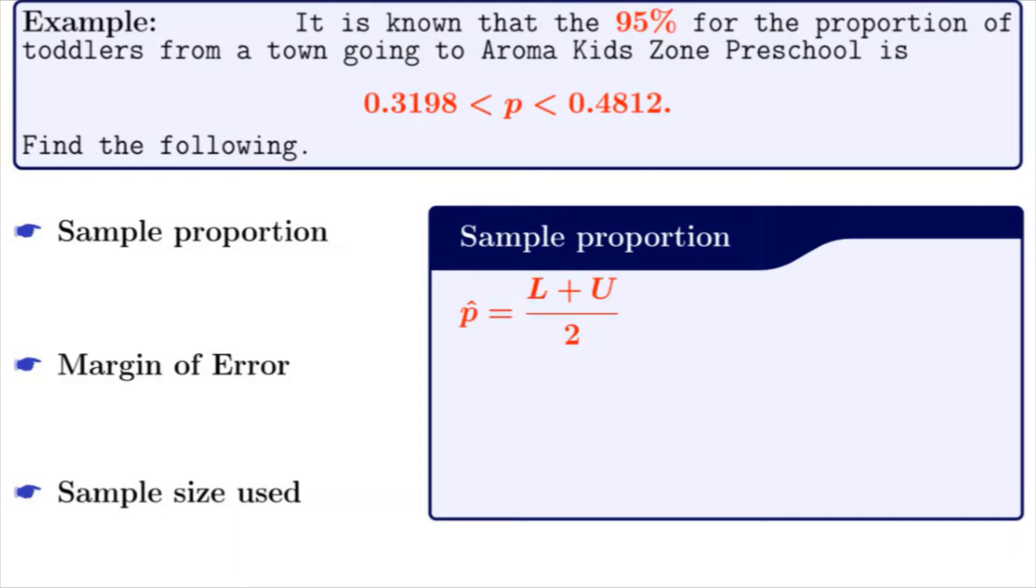For sample proportion p-hat, we have this formula: lower boundary L plus upper boundary U divided by 2. Here our lower boundary is 0.3198 and our upper boundary is 0.4812. So substituting the values into this formula, we get 0.3198 plus 0.4812 divided by 2.